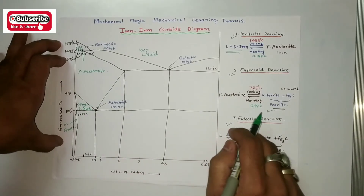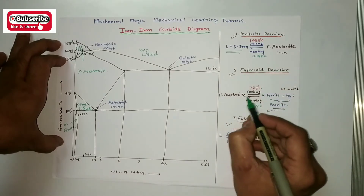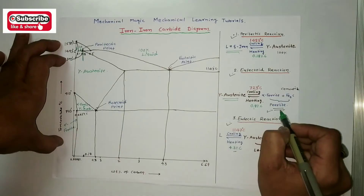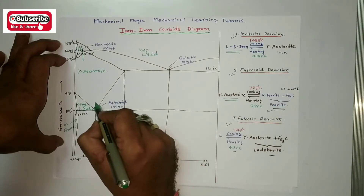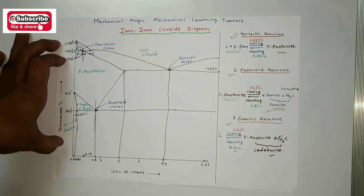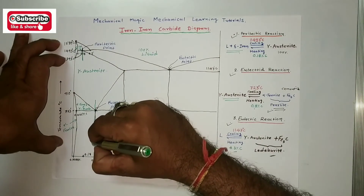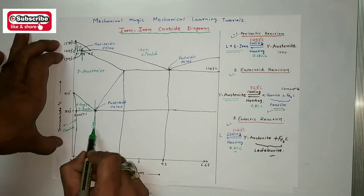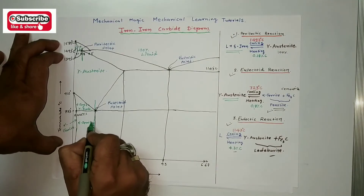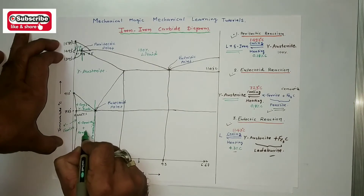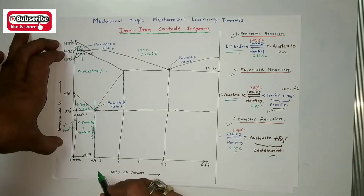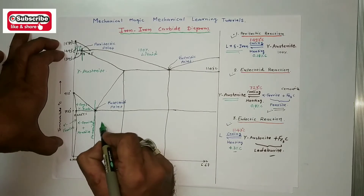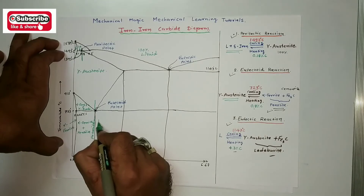For the eutectoid reaction, gamma austenite converts into alpha ferrite plus cementite — this is called the pearlitic transformation or eutectoid transformation. At that point, only pearlite forms. To the left of 0.8 percentage carbon the region is alpha ferrite plus pearlite. After 0.8 percentage carbon, alpha ferrite no longer exists, and from 0.8 to 2 percentage carbon the region is pearlite plus Fe3C — that means cementite.